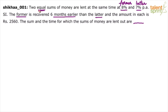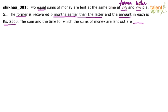If you say the latter was given for X years, the former was given for X years minus 6 months. The amount in each is Rs. 2560. Even if you are confused with the words, your smartness with numbers should help you understand which one was given for X years and which one for X minus half a year.